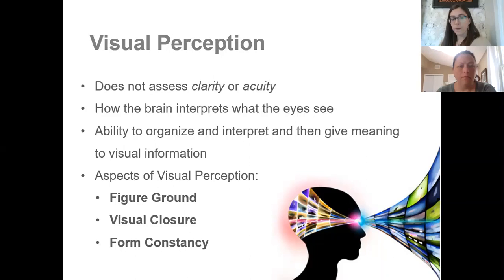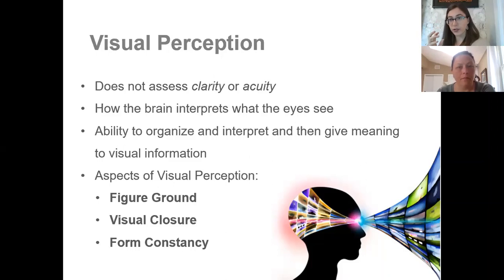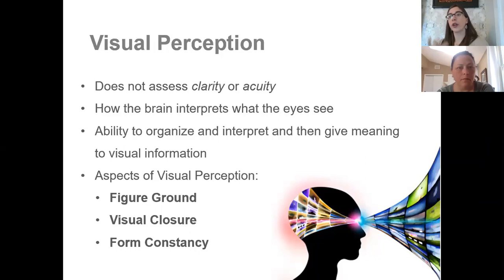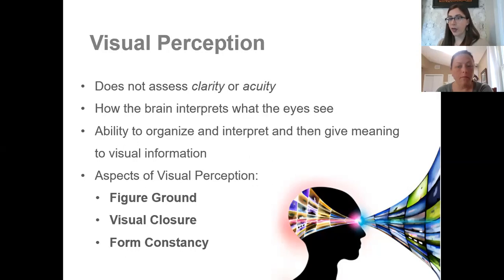Moving on to visual perception — in an OT eval, visual perception does not assess how well your eyes see. What it's looking at is how well your brain interprets what your eye sees. The ability to organize visual information, interpret it, and understand what it means is a huge skill. I'm going to go further into three specific visual perception skills that commonly come up on school-based testing and give examples of how they affect a child in the classroom.